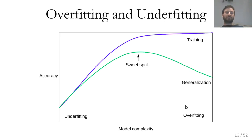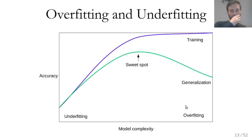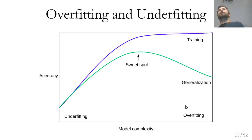The gap between training and generalization performance is a good diagnostic: a very big gap suggests overfitting; if they're very close together you may be in an underfitting regime. Usually, you determine which hyperparameters control model complexity, search over different values, and find the sweet spot that gives the best generalization performance.